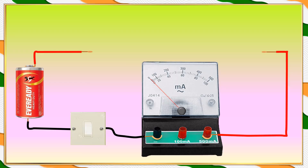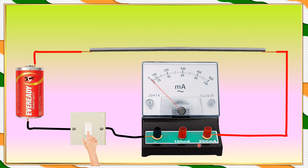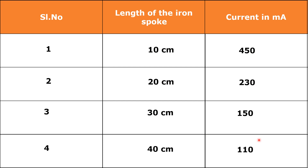Now let us connect the 40 centimeter length iron spoke in this gap. Switching on the circuit — 110 milliamperes current is flowing. When the length of the iron spoke is increasing, the current is gradually decreasing, which means the resistance of the iron spoke is increasing. So when length increases, resistance also increases. Serial number 4, length 40 centimeters, current 110 milliamperes.